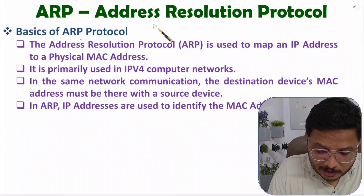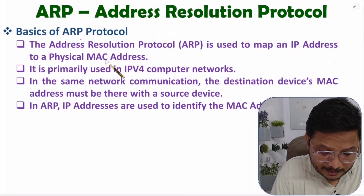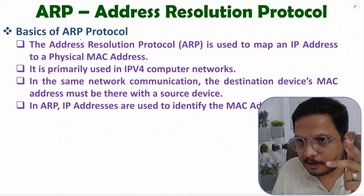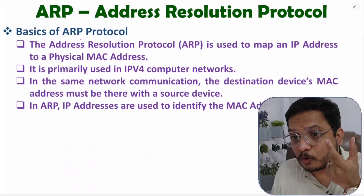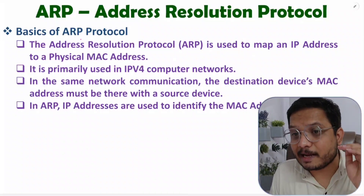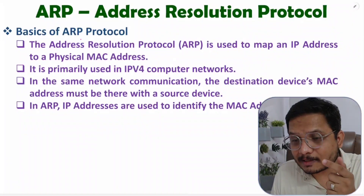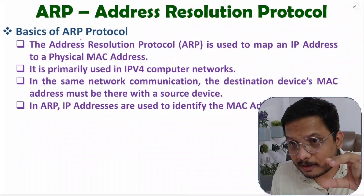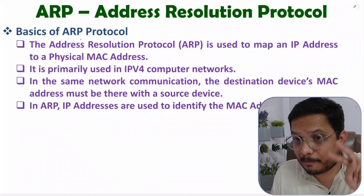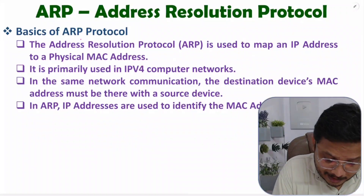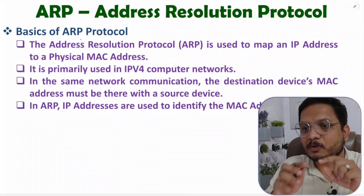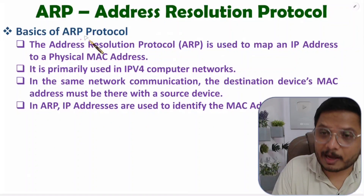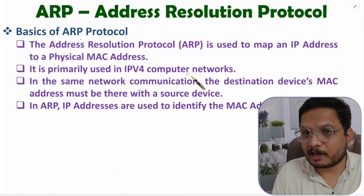ARP means Address Resolution Protocol, and we use it to map IP address to physical MAC address. In a computer network, when you want to communicate, you communicate via frames. Those frames have a MAC address added at the data link layer and an IP address added at the network layer. For frame formation and forwarding, both IP address and MAC address must be present, and that mapping is done via ARP.